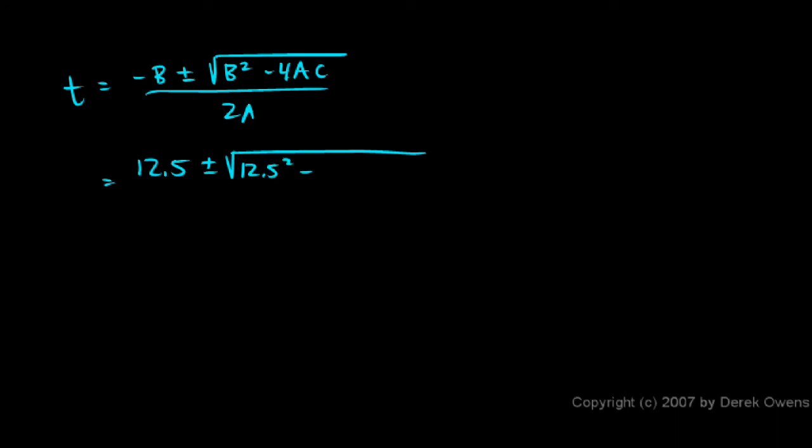So we'll put those numbers through the quadratic formula. And here's what we get. T is equal to negative b plus or minus the square root of b squared minus 4ac over 2a. Now watch what happens. Negative b is 12.5 plus or minus the square root of b squared, which is 12.5 squared minus 4ac. That's 4 times 4.9 times c, in this case was 14.